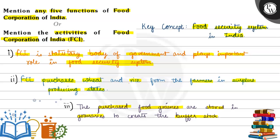Third point: purchased food grains are stored in granaries to create the buffer stock. Buffer stock create करने के लिए जो भी खरीदा हुआ food grain है उसको granaries में store किया जाता है.